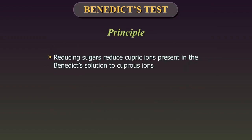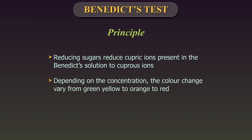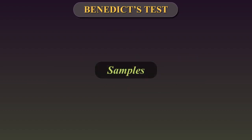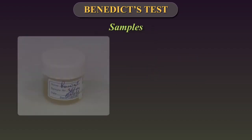The reducing sugars reduce cupric ions present in the Benedict solution to coloured cuprous ions. Depending on the concentration of reducing substances, the colour change may vary from green, yellow, to orange, to red.